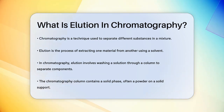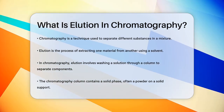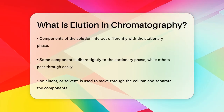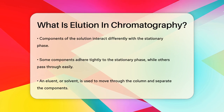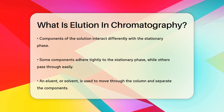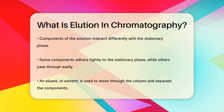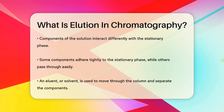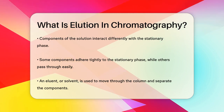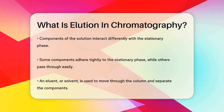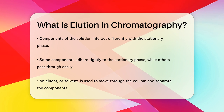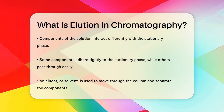The solution you want to analyze is injected into a chromatography column, which contains a solid phase or stationary phase, usually a powder coated on a solid support. The components of the solution interact with this stationary phase in different ways — some might stick more tightly to the stationary phase, while others might pass through more easily.